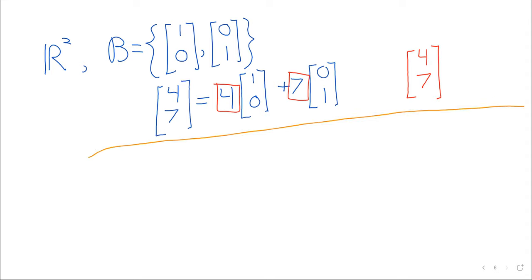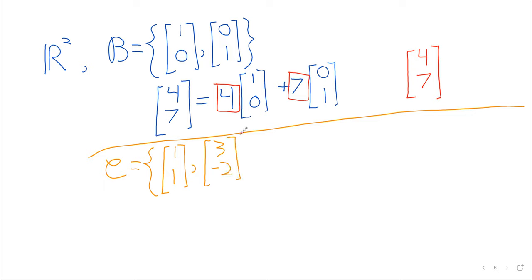But what if we had a different basis? What if C = {(1,1), (3,−2)}? We'll see by the end of next week how to verify this really is a basis — for now let's just accept it. According to the Unique Representation Theorem, we can uniquely store the vector (4,7) in terms of these basis vectors using Gauss-Jordan elimination.